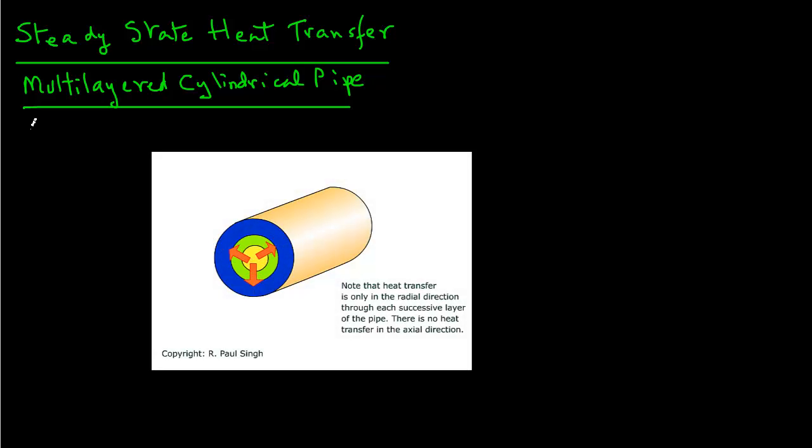Again, a common example is pipes that are conveying either heated or cooled liquids are often insulated. So we have a situation then of a steel pipe covered with insulation which will have two layers.